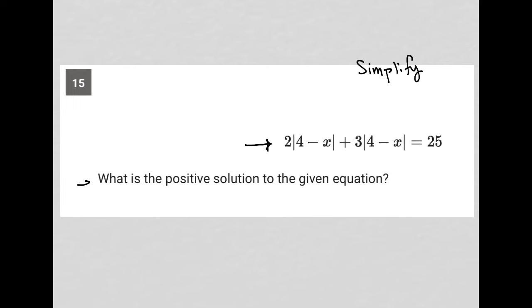The question says, what is the positive solution to the given equation? So what we do here is we actually just treat these absolute values. I see what I'm going to do. So these are like terms, two absolute value four minus x, plus three absolute value four minus x, can be written as five absolute value four minus x, equals 25.